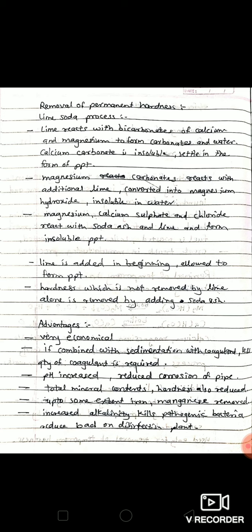In this process, lime reacts with the bicarbonates of calcium and magnesium to form carbonates and water. The calcium carbonate is insoluble and it is settled in the form of precipitate. Magnesium carbonate reacts with additional lime and is converted into magnesium hydroxide, which is insoluble in water.